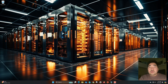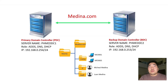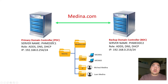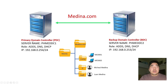So let's begin. I will show you my infrastructure overview. I already created the primary domain controller — this was covered in the previous video — and I named it PHMEDDC1. The role is AD DS, DNS, and DHCP, already configured. The static IP address is 192.168.0.254/24. This is the main primary domain controller, and our domain is medina.com.